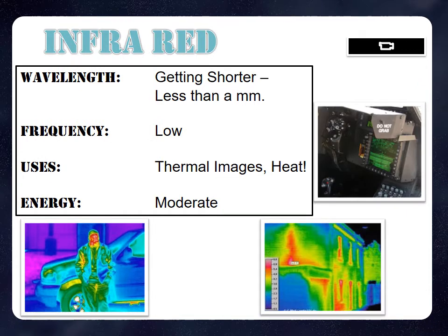Now we're getting into the higher energy wavelengths. Infrared radiation has a wavelength of less than a millimeter. Its frequency is low. It's used for thermal imaging and is what we sense as heat — what you're actually feeling on your skin from outside is infrared radiation. The energy level is moderate.